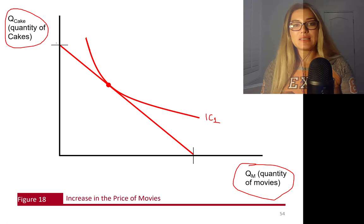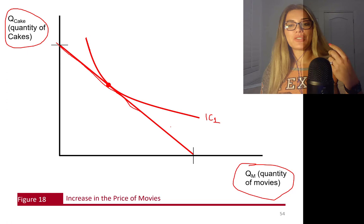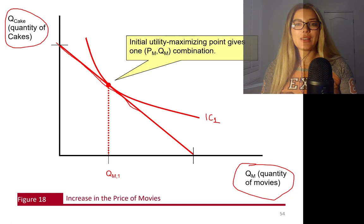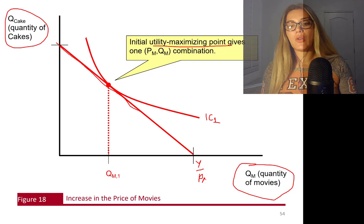This is the budget constraint or budget line. You can watch these videos for this unit — indifference curves are explained in parts 1 and 2, the budget line is in part 3, and then we learned about utility maximization in the subsequent parts. So this is the optimal point — the initial utility-maximizing point gives the price of movies and quantity of movies combination. I have this budget line: Y divided by price of movies — if I spend all my income on movies, these are how many movies I can consume. This intercept was Y, total income.